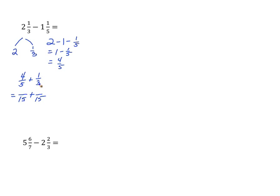Now we have to combine that with the fractional part of our original number. So four-fifths — three times four is twelve, so that's twelve-fifteenths. And one-third is five-fifteenths. We find the sum and get seventeen-fifteenths, which we can decompose into one and two-fifteenths.